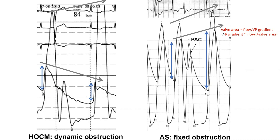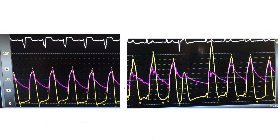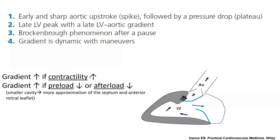Another interesting feature on exam: in HOCM after a PVC, the murmur gets worse but the pulse on exam drops — reflecting the spike and dome morphology becoming more pronounced. This is a characteristic exam feature of HOCM. Whenever the murmur dramatically worsens after a PVC, we think of HOCM much more than aortic stenosis. This slide summarizes the LV and aortic morphology, the Brockenbrough phenomenon after a pause, and the dynamic gradient with maneuvers.